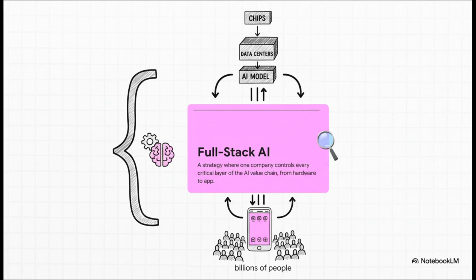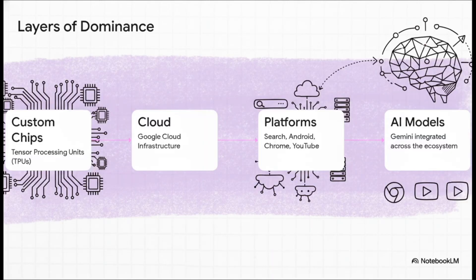It means one company owns and optimizes every single piece of the puzzle. Not just the AI model, but the custom chips that run it, the massive data centers that house it, and the apps that deliver it to literally billions of people.